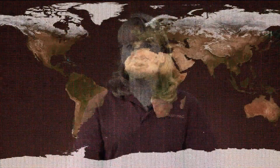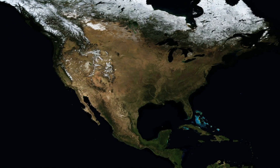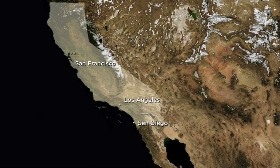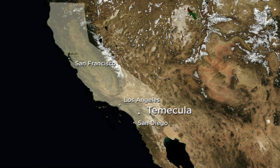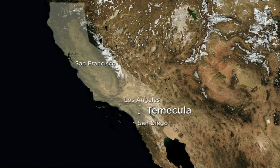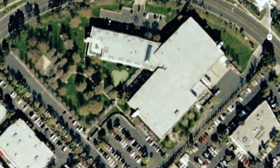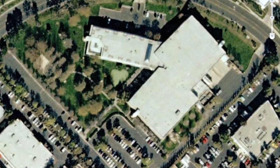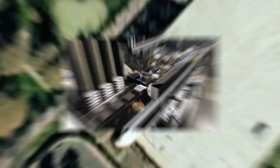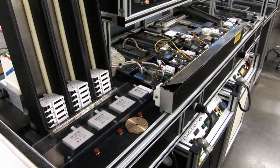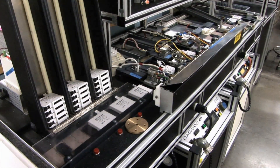Opto22 knows that reliability is important to you. That's why all of our products are built in our manufacturing plant here in Temecula, California, and we test each module at least twice before it is put on the shelf. Then we back all that up with a lifetime guarantee on all optically isolated models.